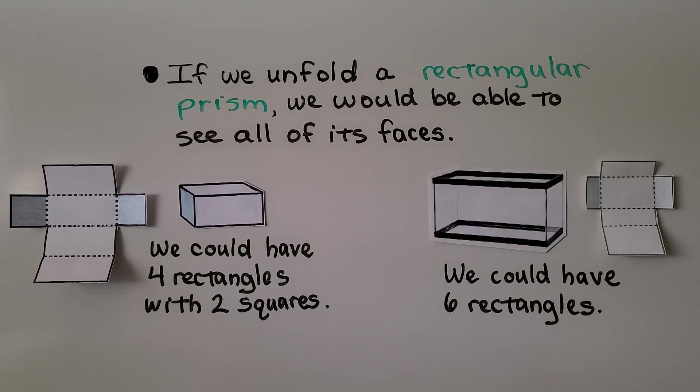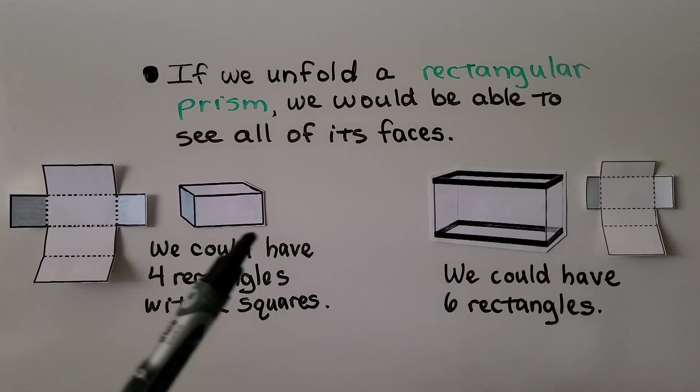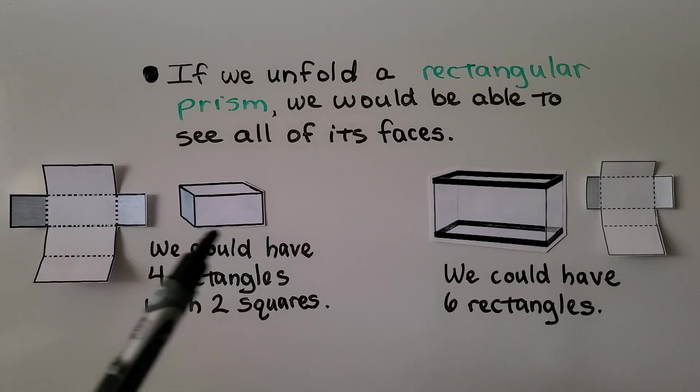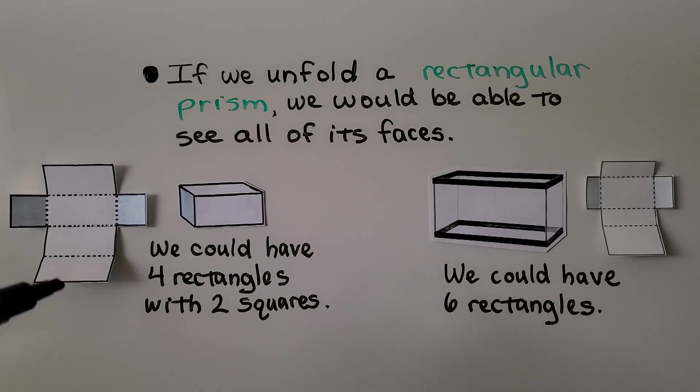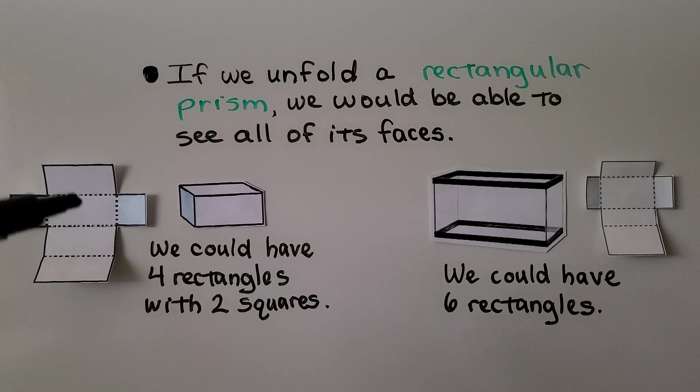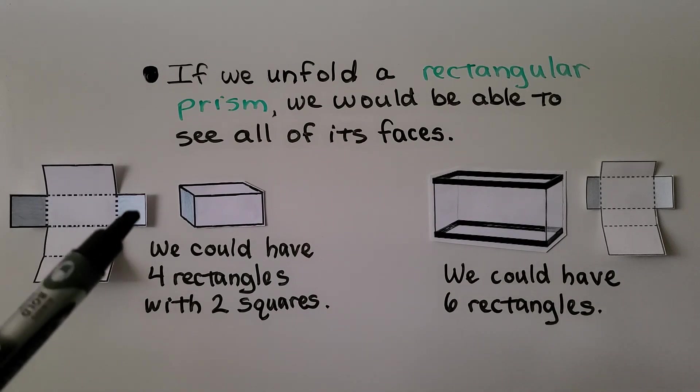If we unfold a rectangular prism, we would be able to see all of its faces. Here it's got squares on each side, on the left and the right. We can't see that one, but we know it's there. And if we unfolded it, we could see there's a square here and here, and we've got four rectangles. So we could have four rectangles with two squares.